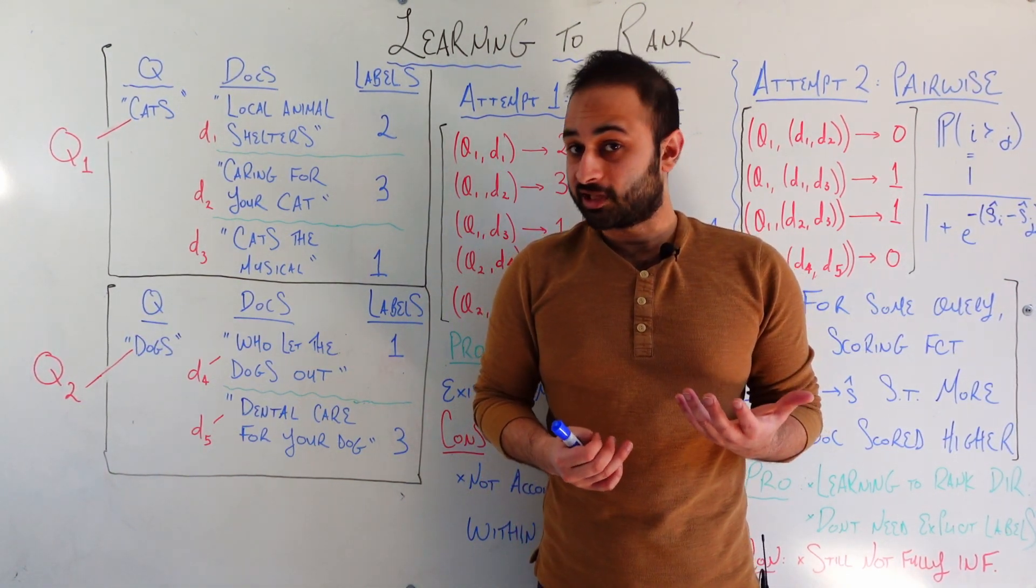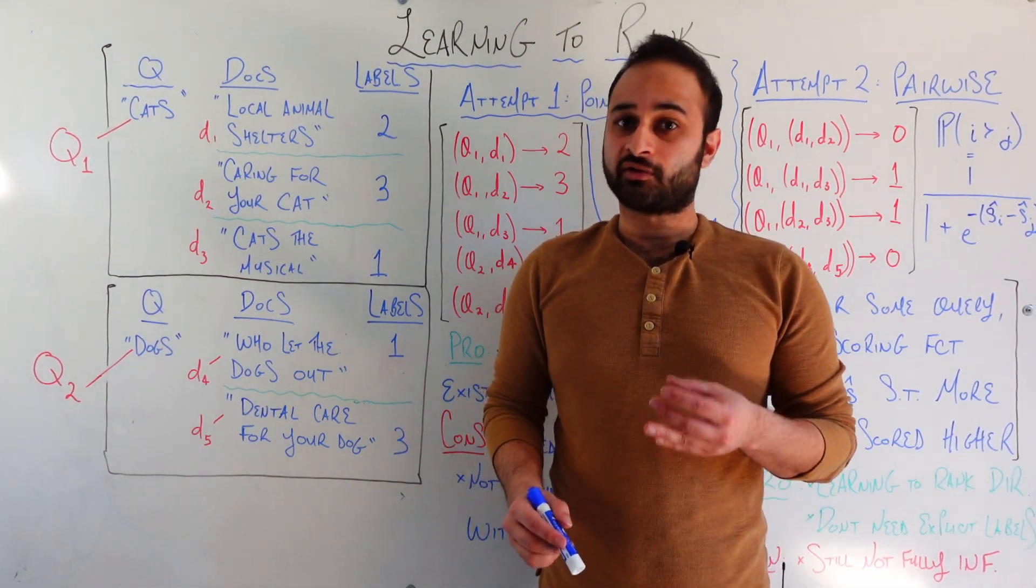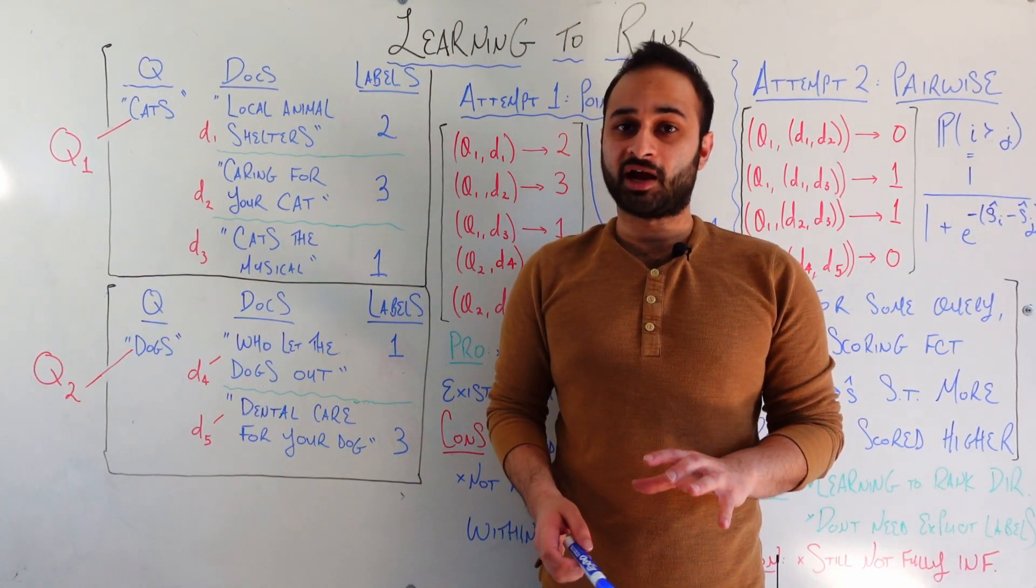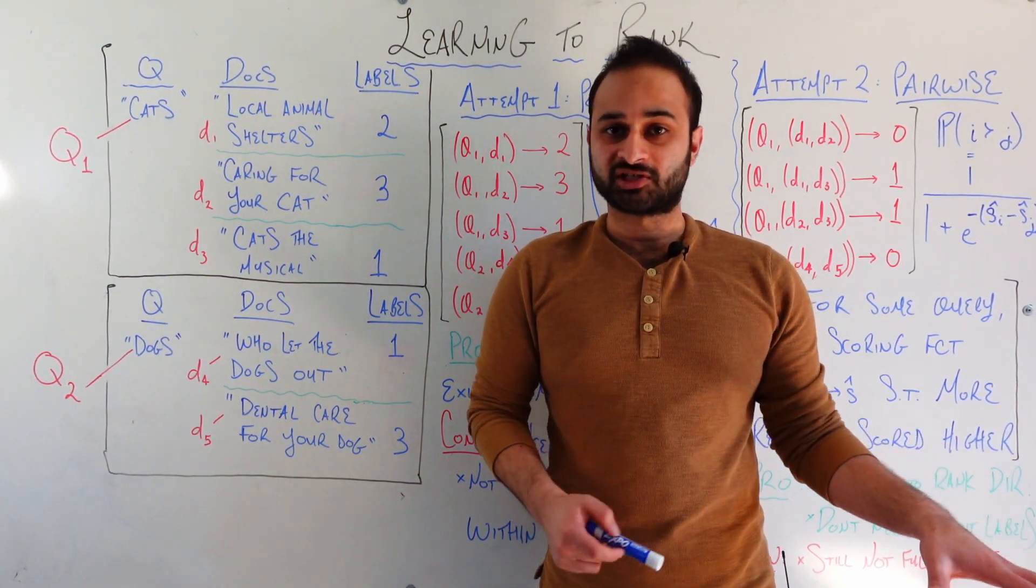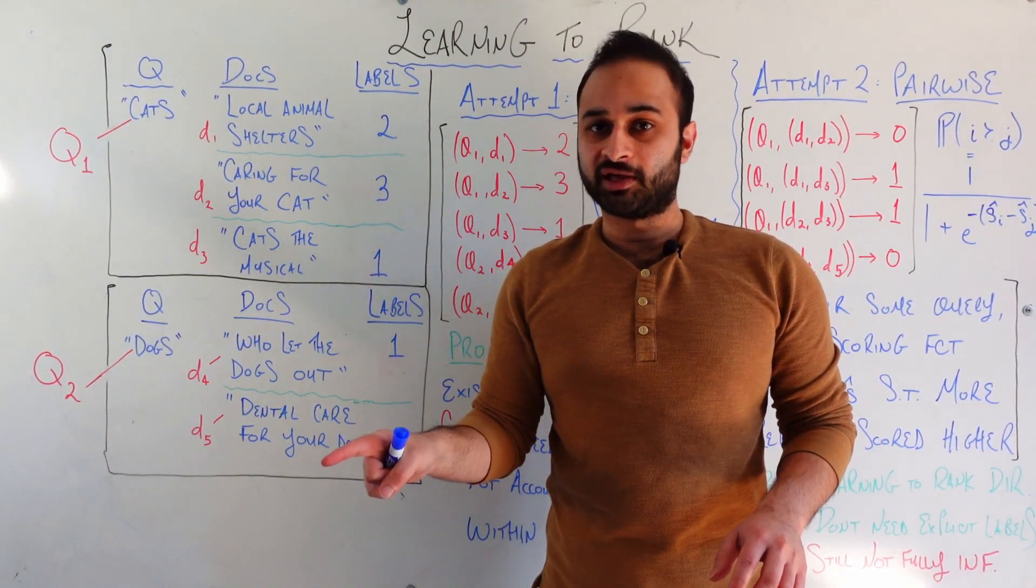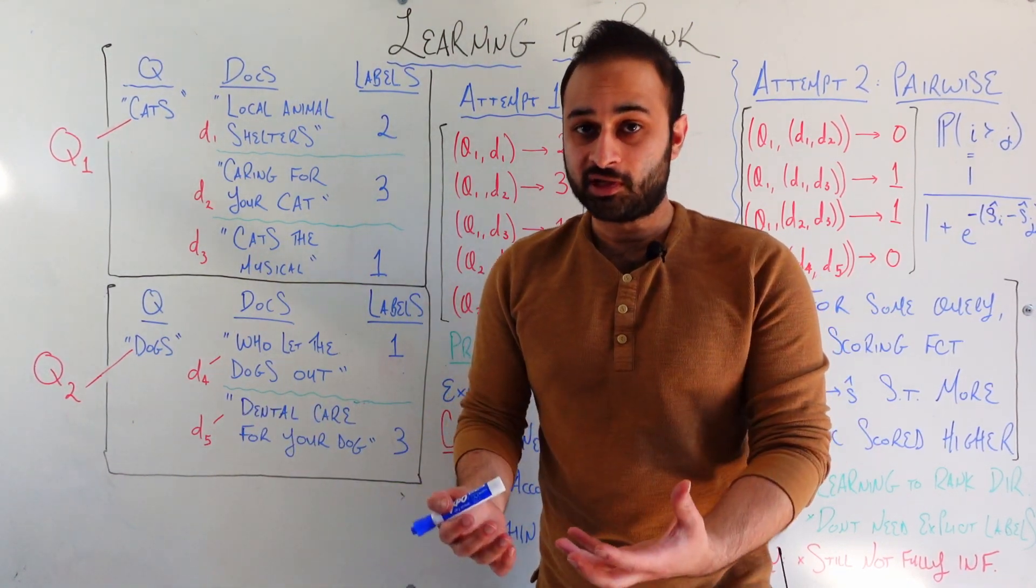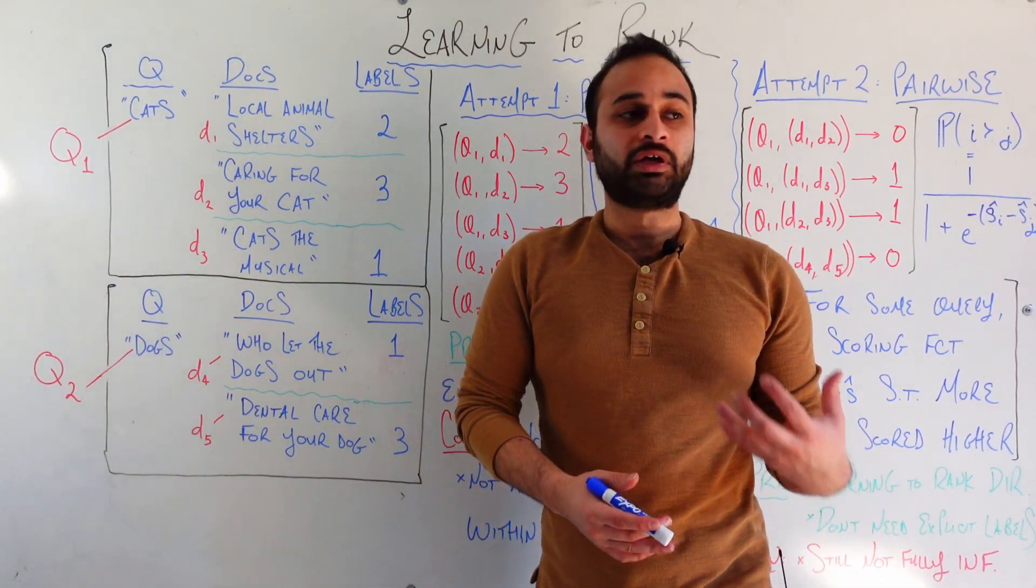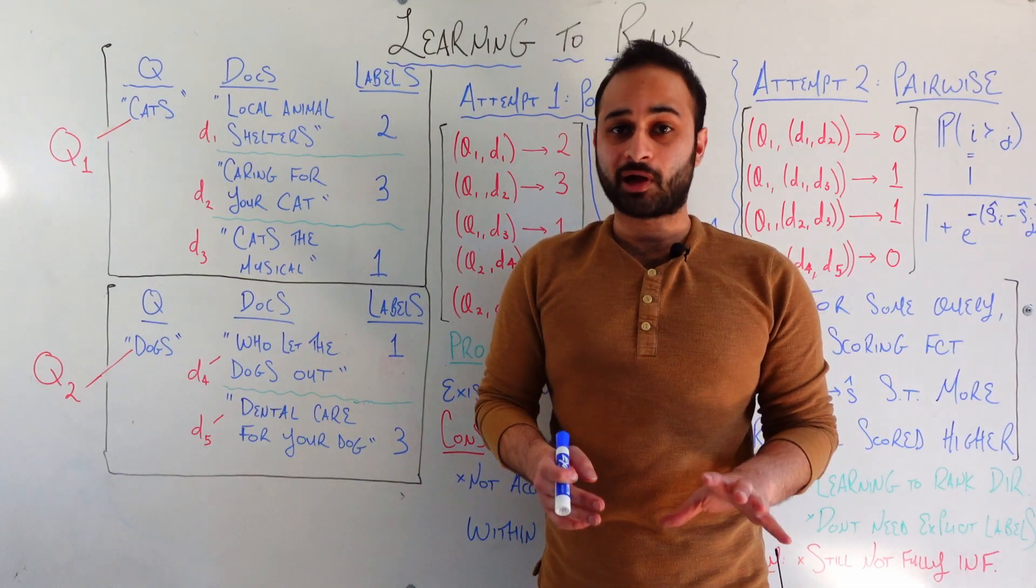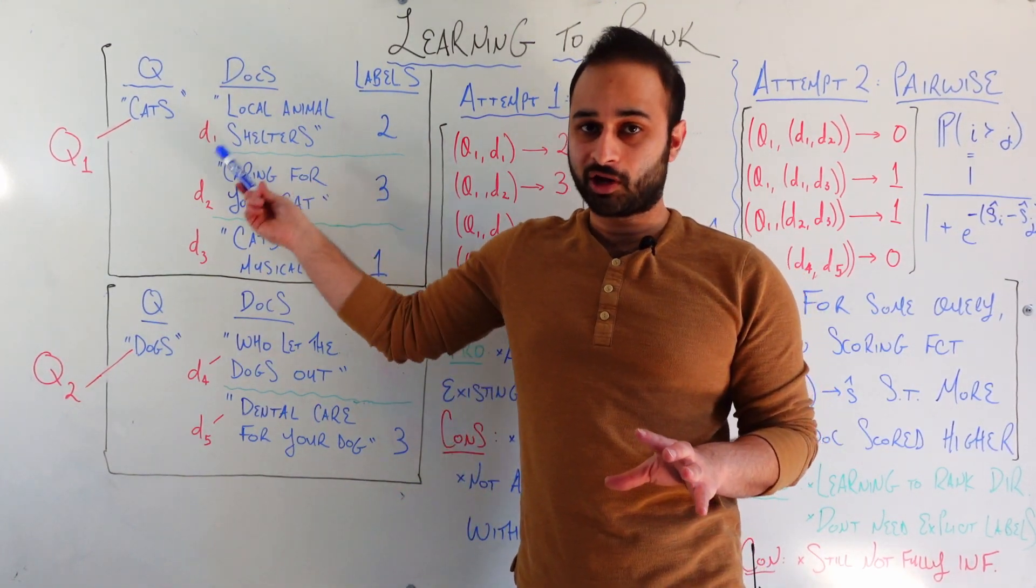For our labels today, we'll be assuming they're either 1, 2, or 3, with 3 signaling that this document is really relevant to this query, and 1 meaning that it's not relevant at all. The immediate question is, where do I get those labels? The labels can come from many different places. At the ideal level, they are hand labeled. Most of the time, they're gathered via some kind of automated system. For example, if you actually have the search engine running, you can use the clicks on these things as your labels.